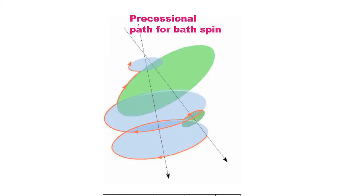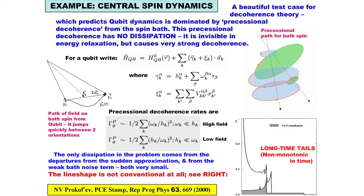The bath spin is going to start precessing around the new field each time, and so it follows a path which classically will look like a series of circles, which start each time the qubit flips. This is a classical picture, but of course these are just paths in a path integral if you want to do it quantum mechanically. You see that the precessional path followed by the bath spin is conditional on the path followed by the central system. That's another way of saying that they're entangled — the precessional dynamics of the bath spin is entangled with that of the central system, which, if you then integrate out the bath, gives you decoherence.